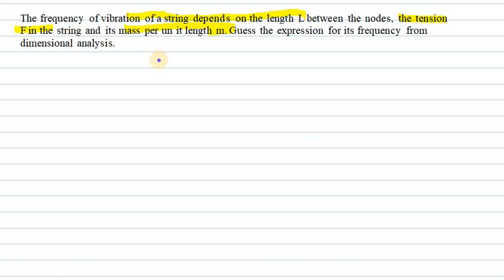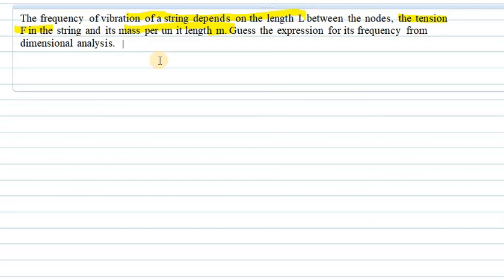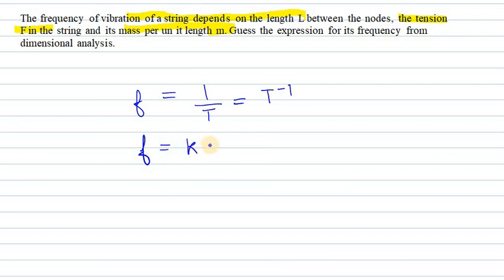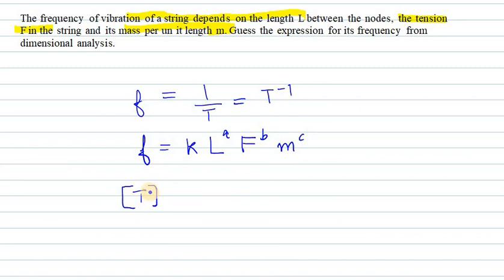Frequency is dependent on T raised to power minus 1. Frequency is dependent on three major quantities: length L raised to power A, then tension or force raised to power B, then mass per unit length M raised to power C.